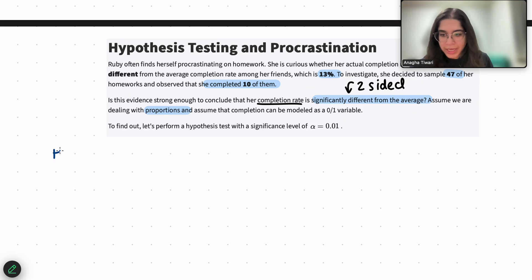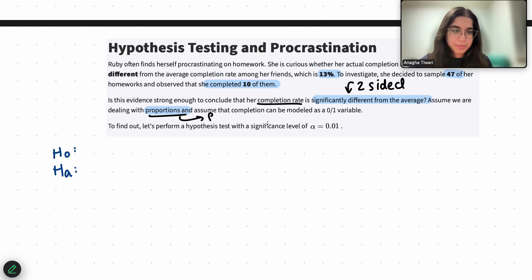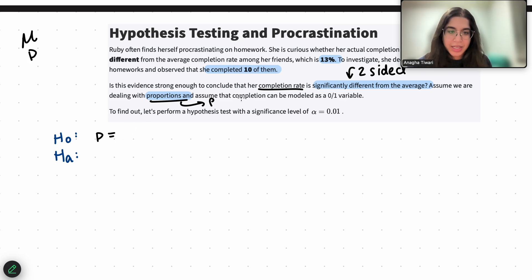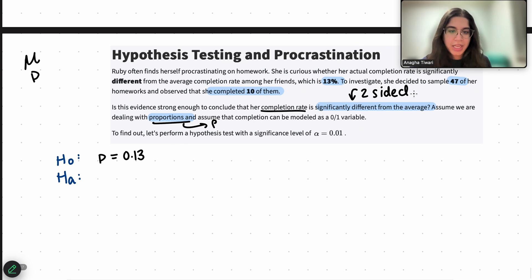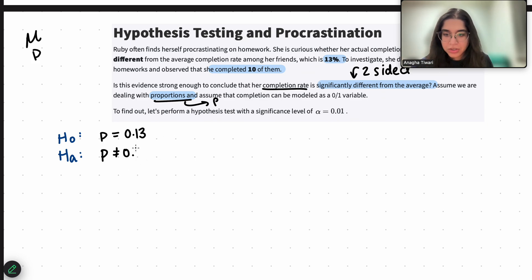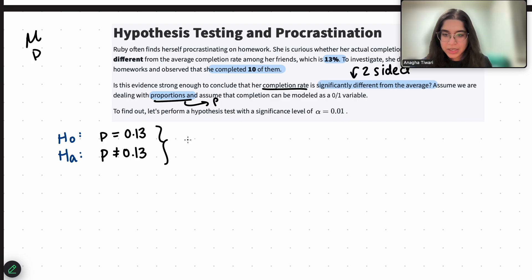The first thing we do is write our null and alternate hypothesis. Since we are dealing with proportions, we're going to use P as a population parameter. Whenever we deal with means it's going to be mu, and whenever we deal with proportions it's going to be P. Our null hypothesis is that P — basically the completion rate among her friends — equals 0.13. And the alternative hypothesis is that P is not equal to 0.13. Notice that we don't use P-hat in the hypotheses.